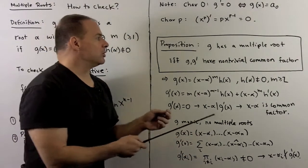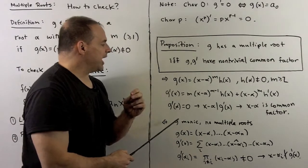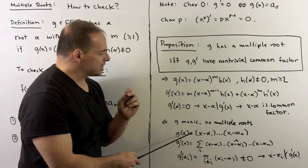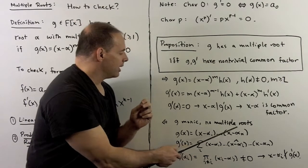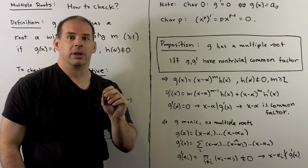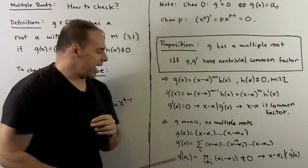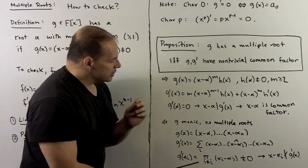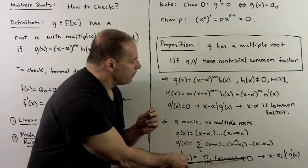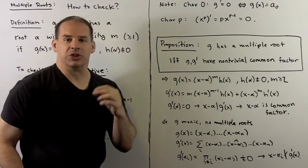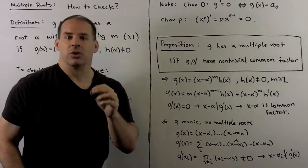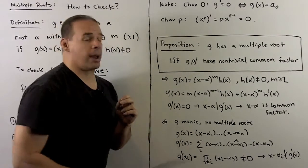In the other direction, we use the contrapositive. Assume g has no multiple roots; assume it's monic, so we can write g as a product of distinct linear factors. Taking the derivative, the net effect is we omit one factor at a time and sum. Evaluating at root α_i gives the product of the differences. Because there are no multiple roots, this is non-zero, so α_i is not a root of g', meaning x − α_i does not divide g'. Therefore there are no common factors between g and g'.